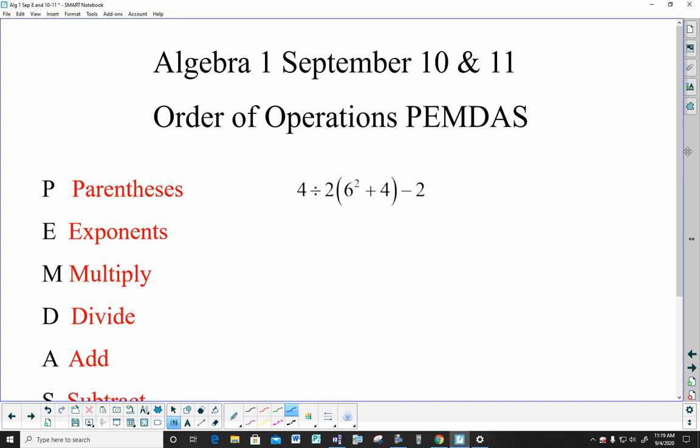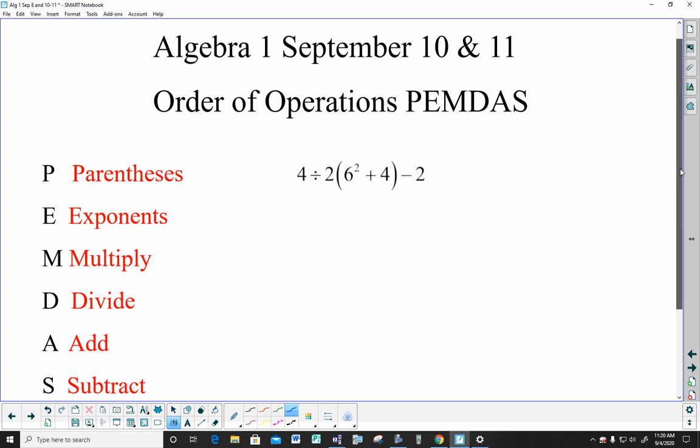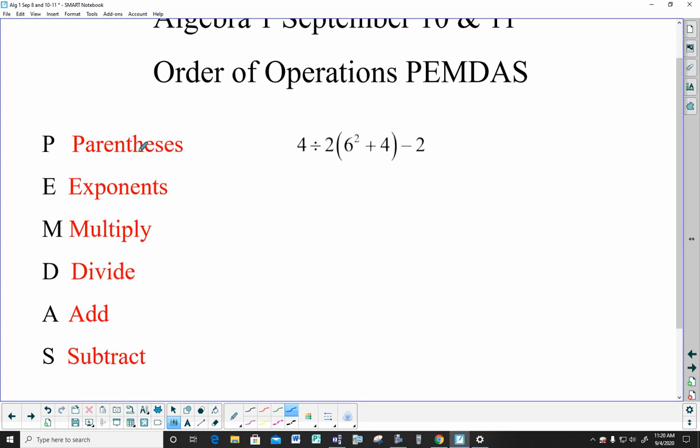You guys are going to be doing order of operations. You've learned it as PEMDAS: Parentheses, Exponents, Multiply, Divide, Add, Subtract. When you have an expression that looks like this, the order that you do it is down PEMDAS. Now, I need to add a couple things in there. Parentheses are on one level, exponents are on one level, but multiply and divide and add and subtract are on the same level. And I'll talk about that as we approach them.